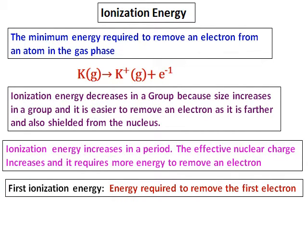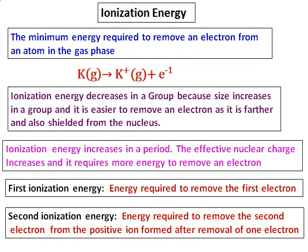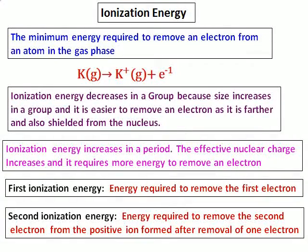Some other definitions you should know: the first ionization energy is the energy required to remove the first electron. The second ionization energy is the energy required to remove the second electron from the positive ion formed after the removal of the first electron. With this as the base, we will learn more about ionization energy.